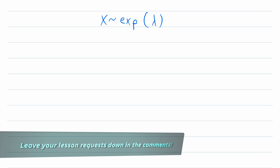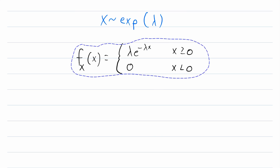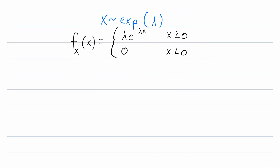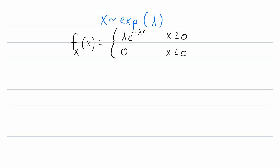We'll say that x is an exponentially distributed random variable with parameter lambda — that's what this notation means. If you haven't already been introduced to the exponential distribution, I recommend checking out my video overview of the distribution; I'll leave a link to that in the description.